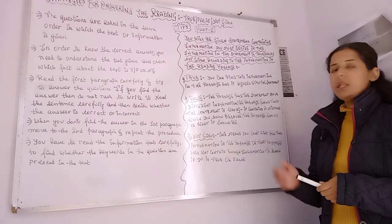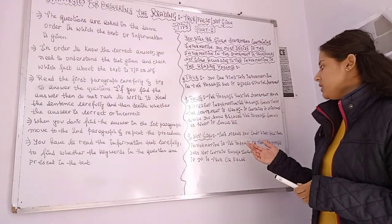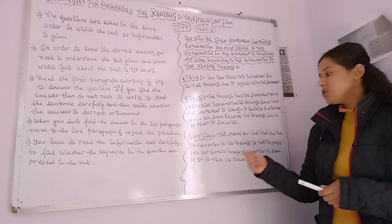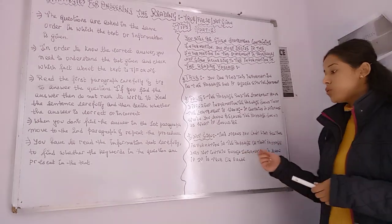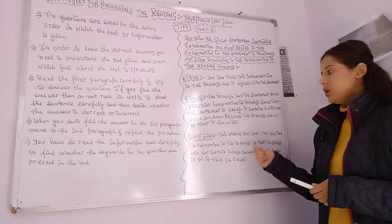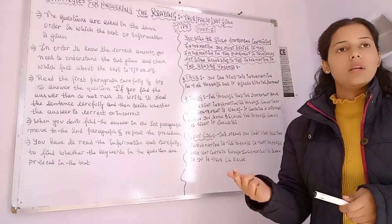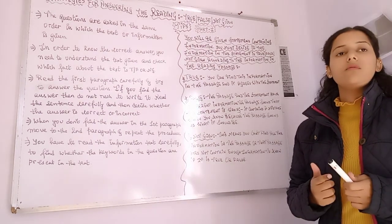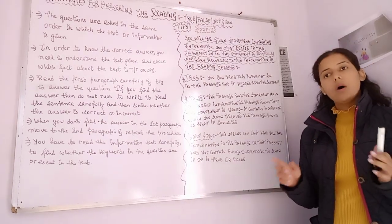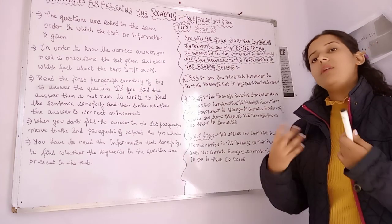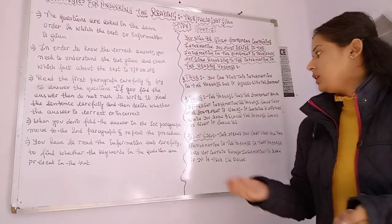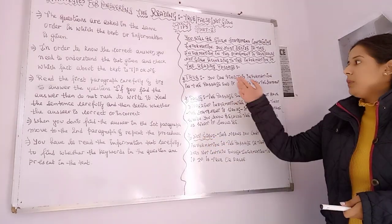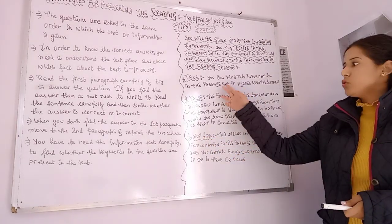What is the meaning of NOT GIVEN? This means you couldn't find all the information in the passage, or the passage does not contain enough information to know if it is true or false. Not Given applies when the information is given only partially, is not given at all, or is not relevant to the statement. The meaning of true, false, and not given should now be clear.